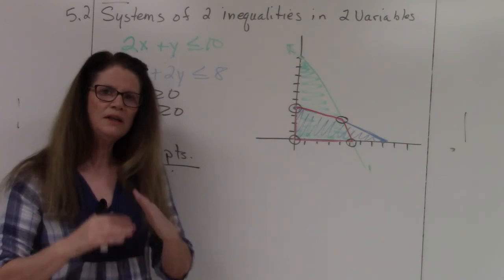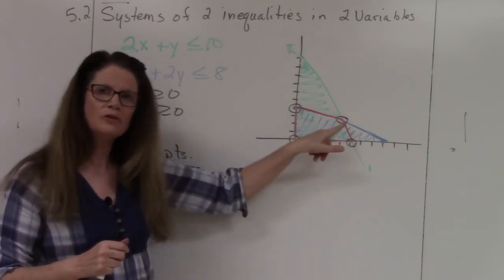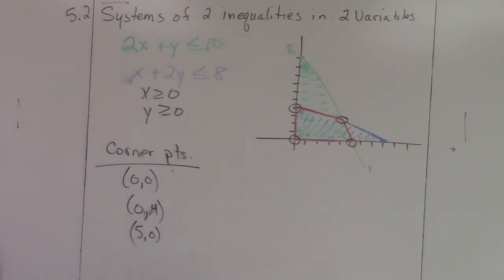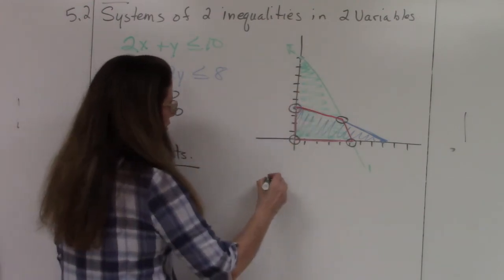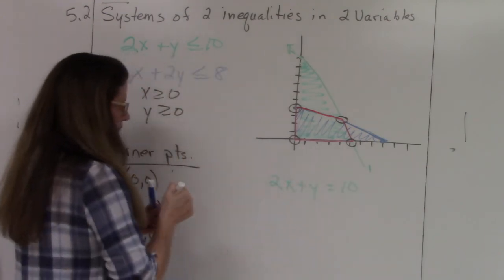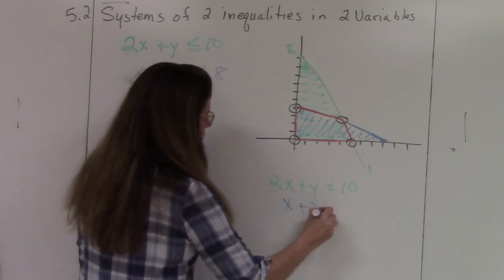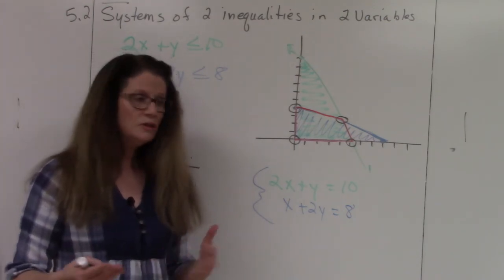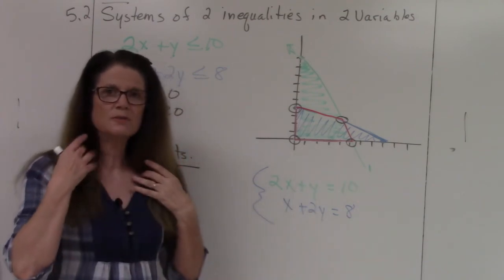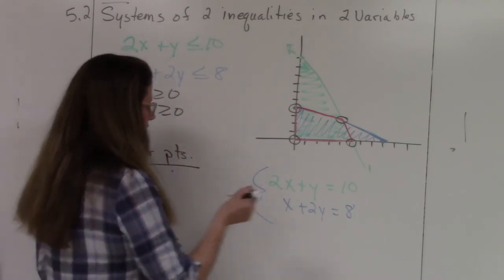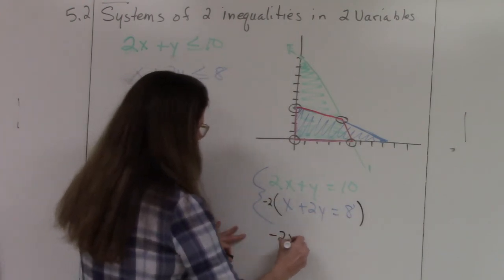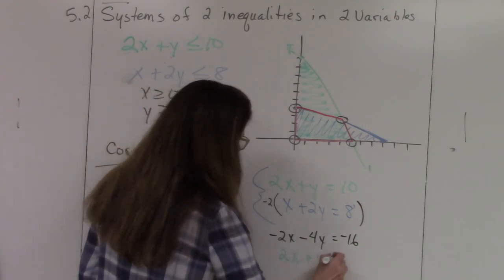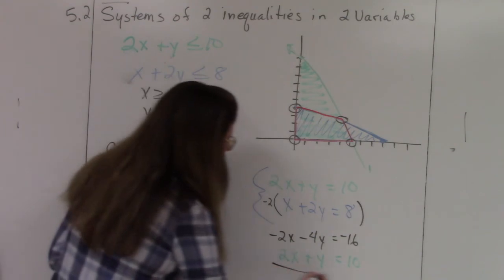To find where the green and blue lines intersect, we use elimination — going back to systems of equations. Since the shading is done, we no longer worry about the inequality: 2x + y = 10 and x + 2y = 8. I'll multiply the second equation by −2 to get −2x − 4y = −16.